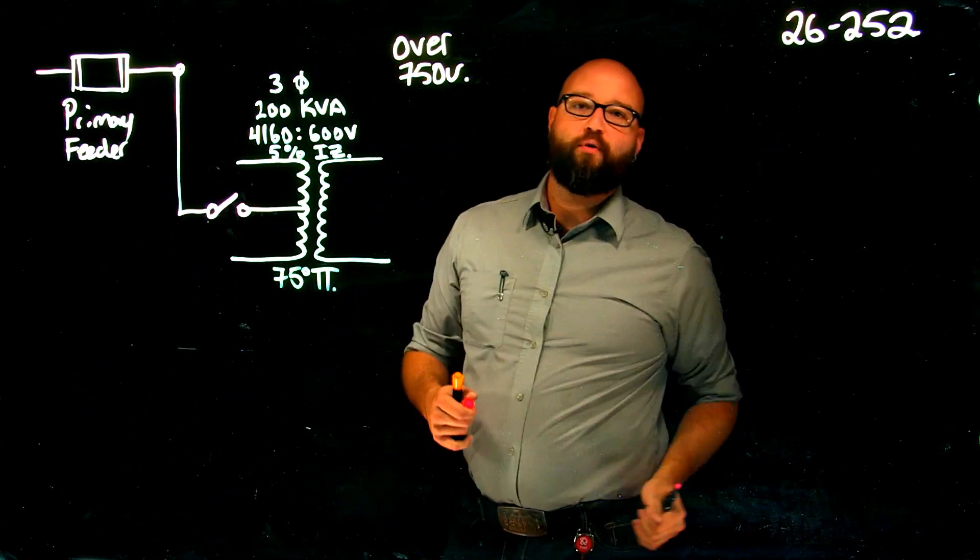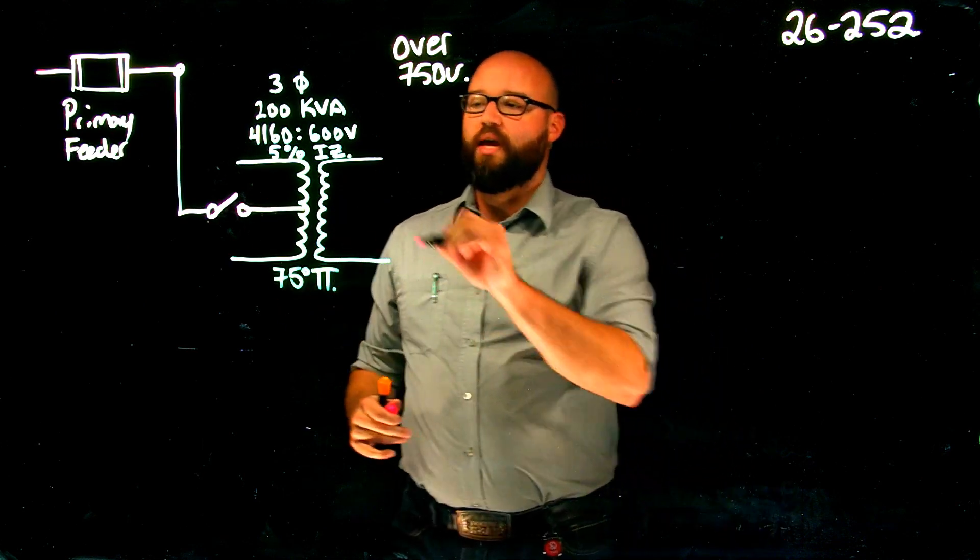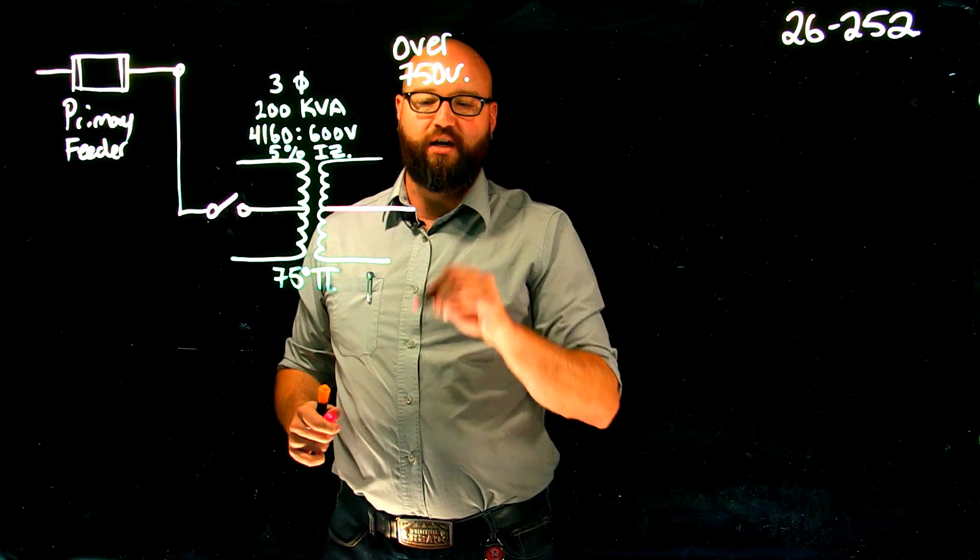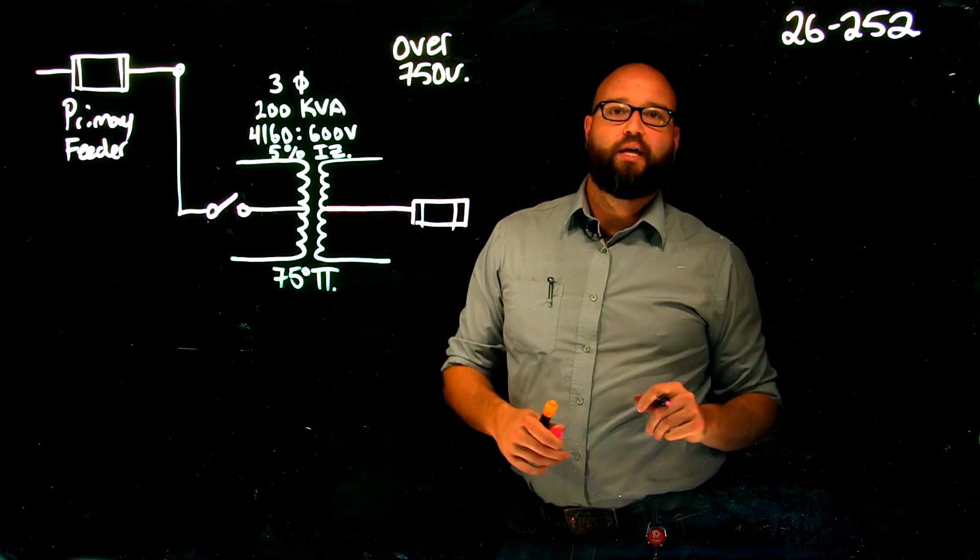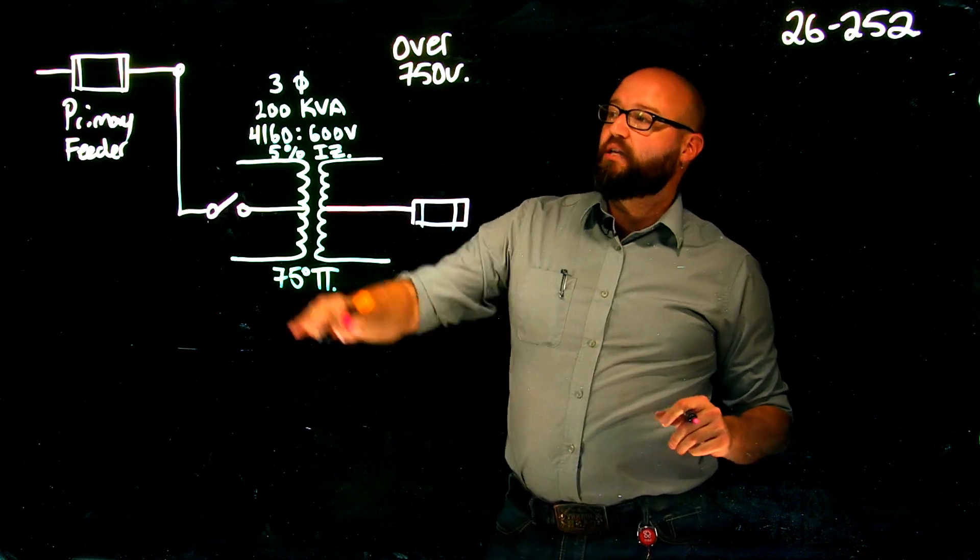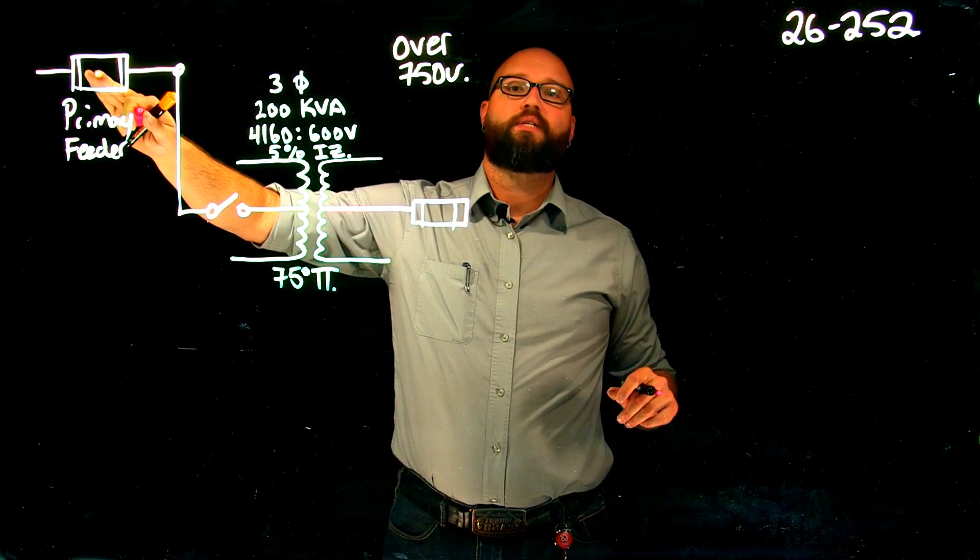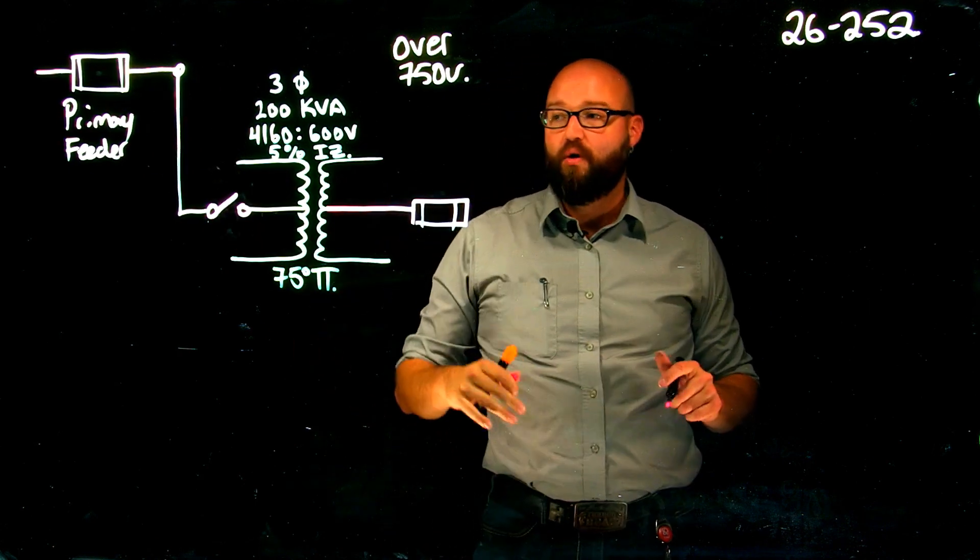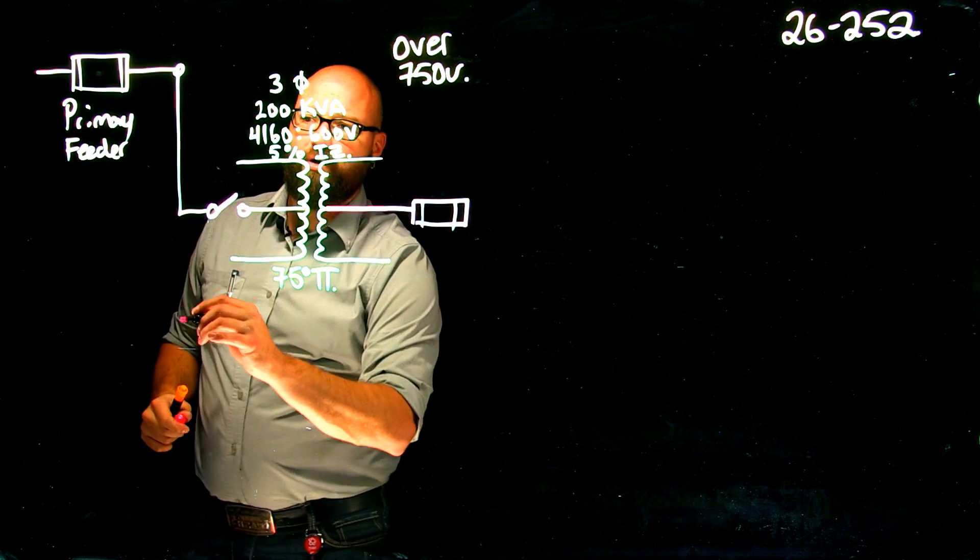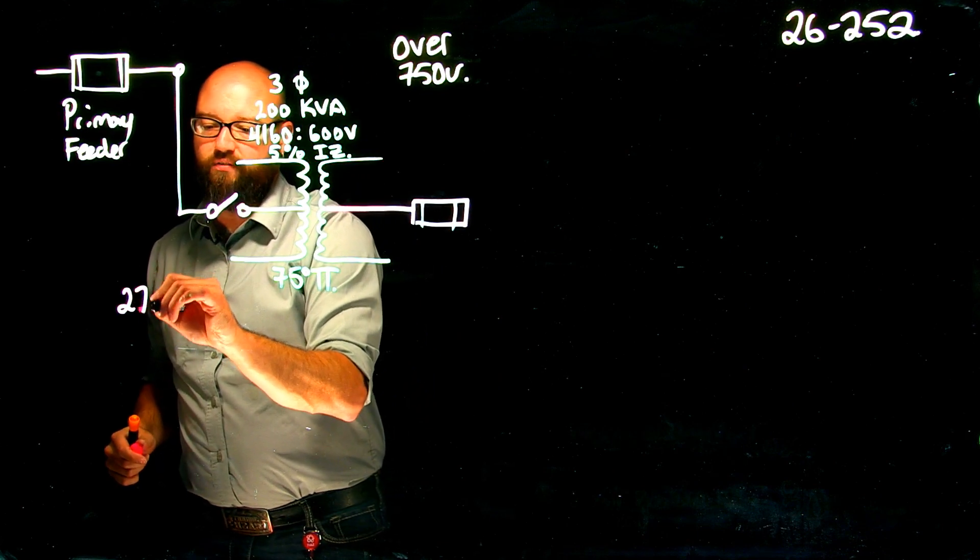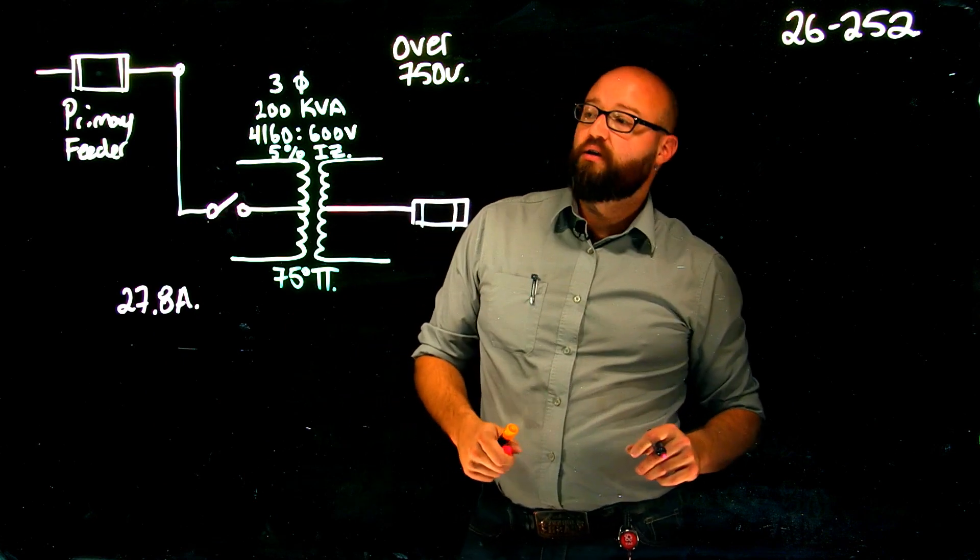Let's look at what happens when we have omitted primary protection in our transformer. 26-254 sub-rule 3 and 4 tell me it's not necessary to have primary protection as long as we have secondary protection rated at values calculated from table 50, as well as primary feeder protection calculated from table 50. We've already calculated that our primary rated current is 27.8 amps, because we will still need to know that number.